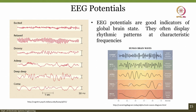We have seen alpha, beta, theta, and delta — but what about gamma? Gamma is generally between 31 and 100 Hz and represents peak focus and expanded consciousness. Beta is 16 to 30 Hz showing alertness, concentration, and cognition. Alpha is between 8 and 15 Hz for relaxation, visualization, and creativity. Theta is between 4 and 7 Hz for meditation, intuition, and memory. Delta is 0.1 to 3 Hz for detached awareness, healing, and deep sleep.